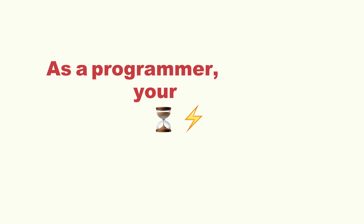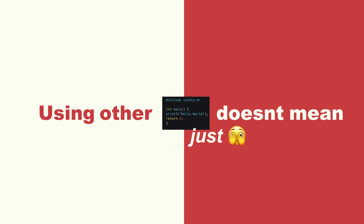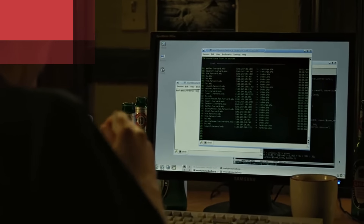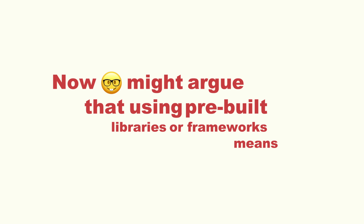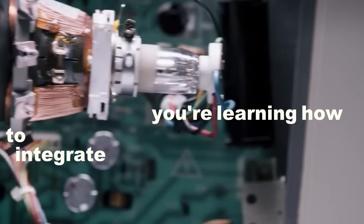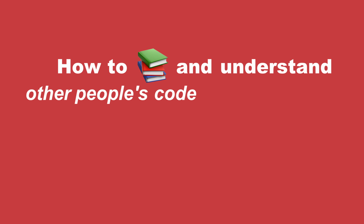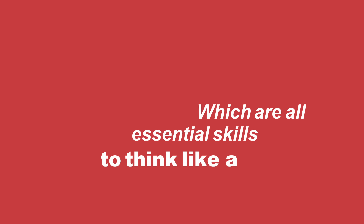As a programmer, your time and energy are the most important things you have, and they should be spent on the parts of the project that truly require your unique input. But using other code doesn't mean blindly copying and pasting without understanding what's happening under the hood. You should always take the time to learn the tools you're working with — this way you're not just assembling code, you're building a deep understanding of the systems as well. By using pre-built libraries or frameworks, you're exposing yourself to industry standards and new ways of thinking, learning how to integrate different components, how to read and understand other people's code, and how to make informed decisions about which tools are right for the job.